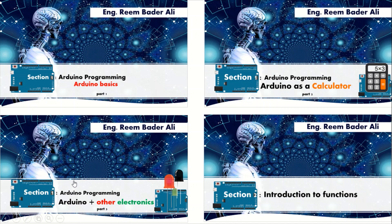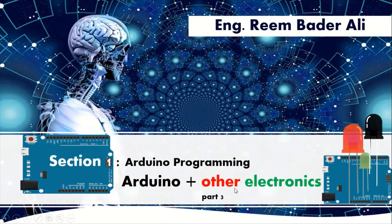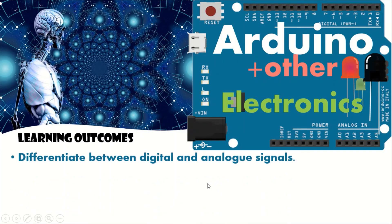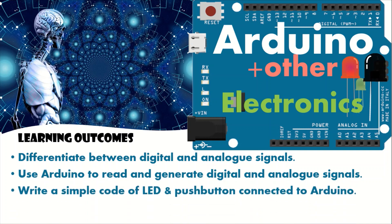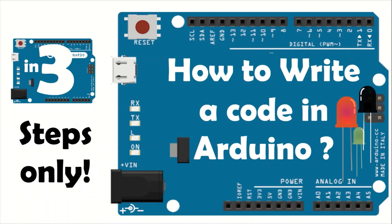Now we will start with how we can use Arduino with other electronics. The learning outcomes are: first, you will differentiate between digital and analog signals; then you will use Arduino to read and generate digital and analog signals; and finally you will write a simple code with an LED and push button connected to an Arduino.